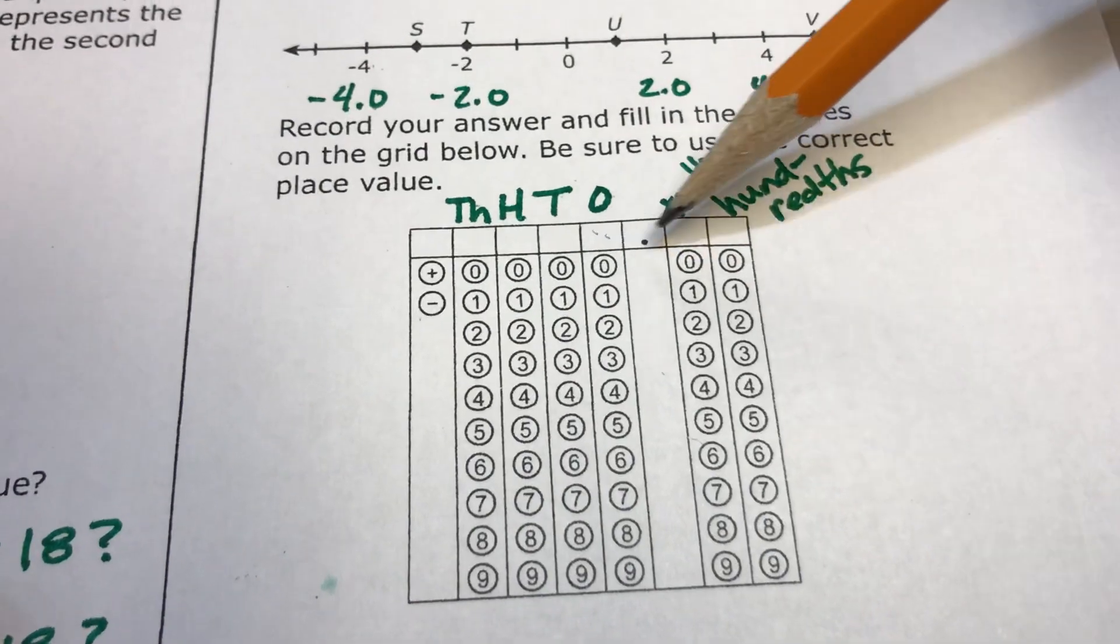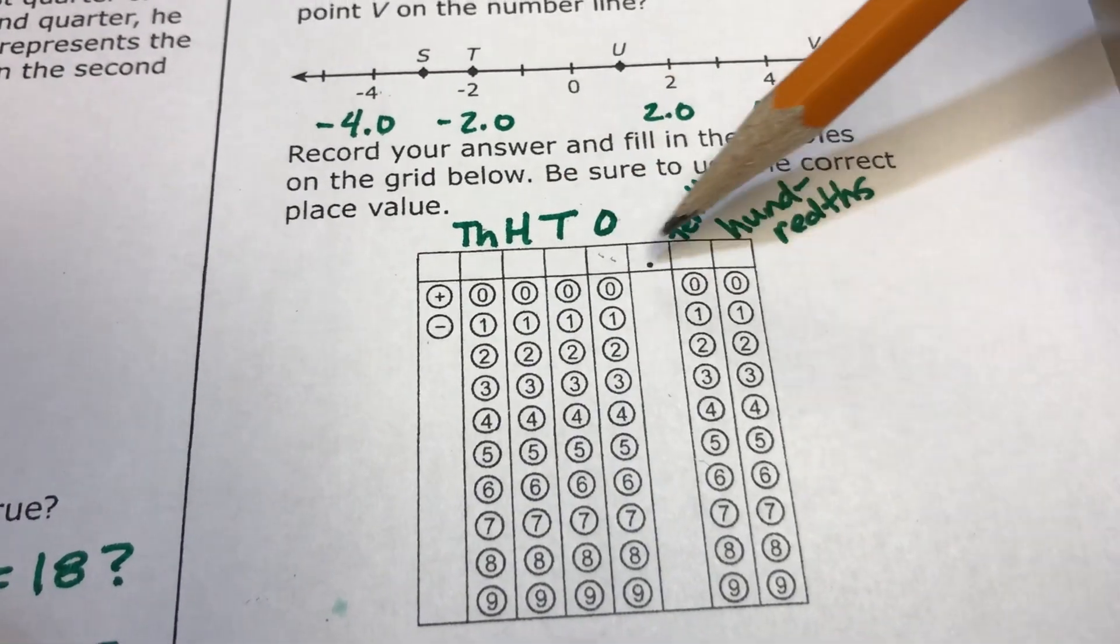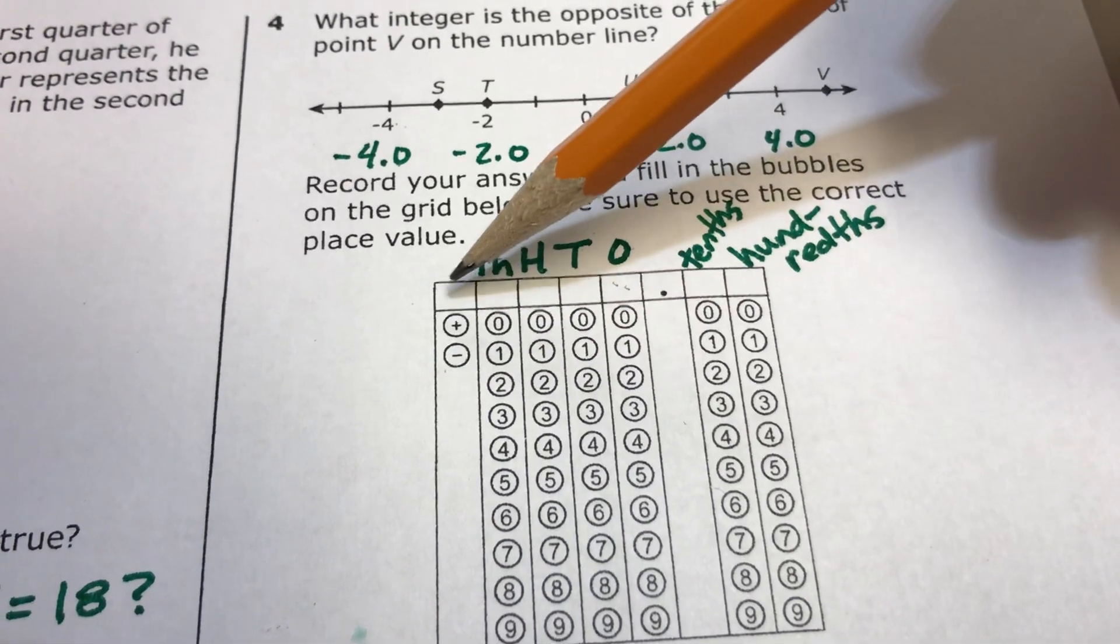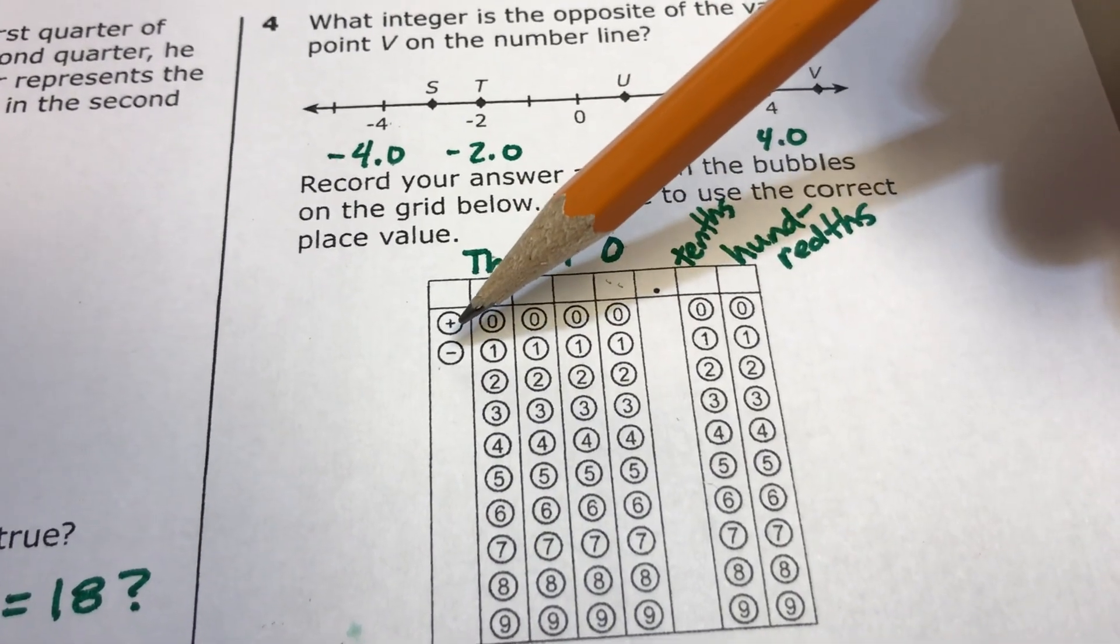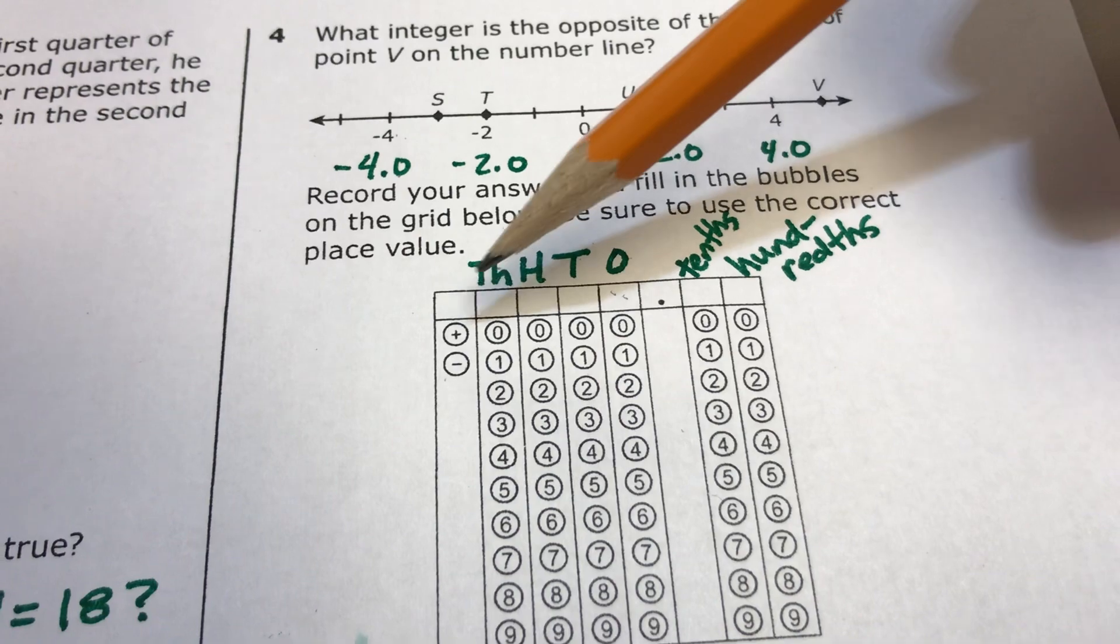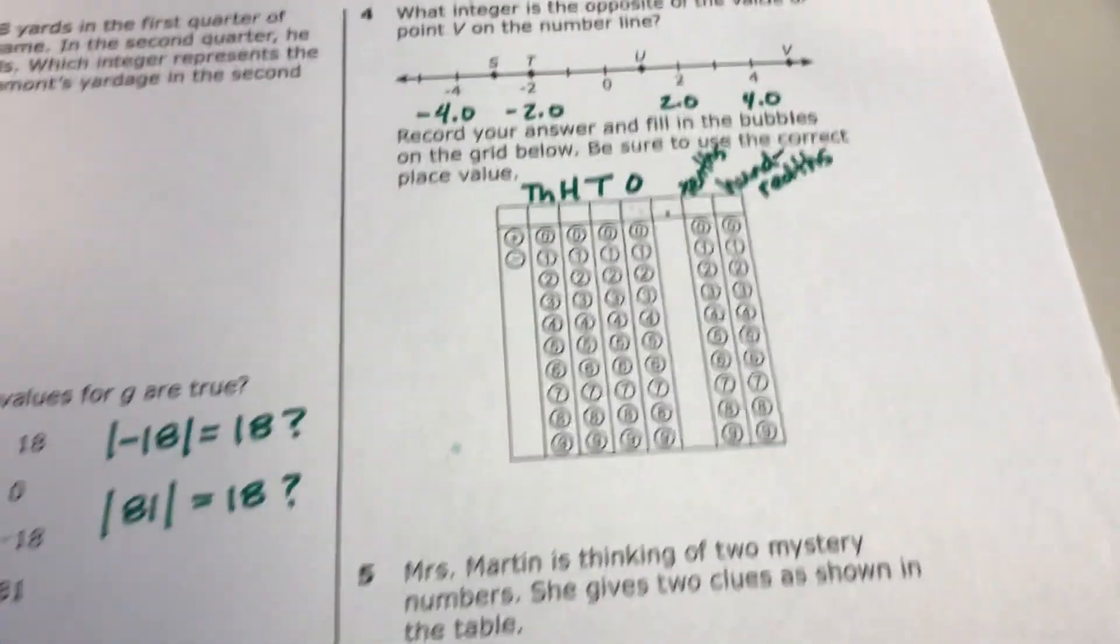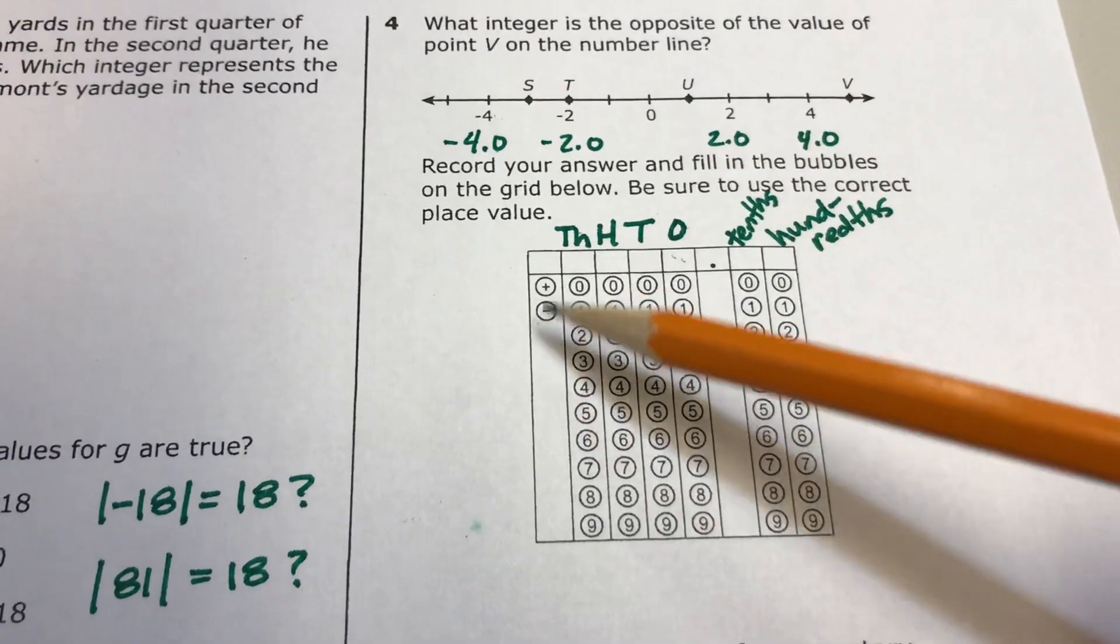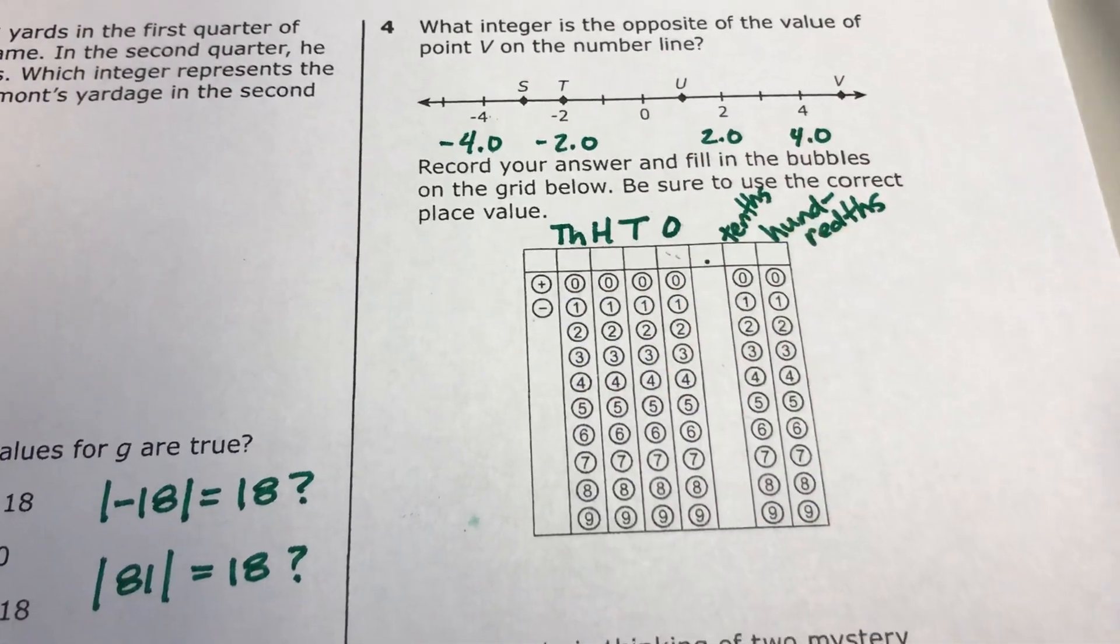Then, you go and you put it in the place value boxes correctly, and then if you want a negative answer, bubble negative and write a negative up here. If you want a positive answer, bubble positive and put a positive sign right there. Just a lot of confusion on that, and you've had this in fifth grade, but we've added this positive and negative part to it, so that part's different.